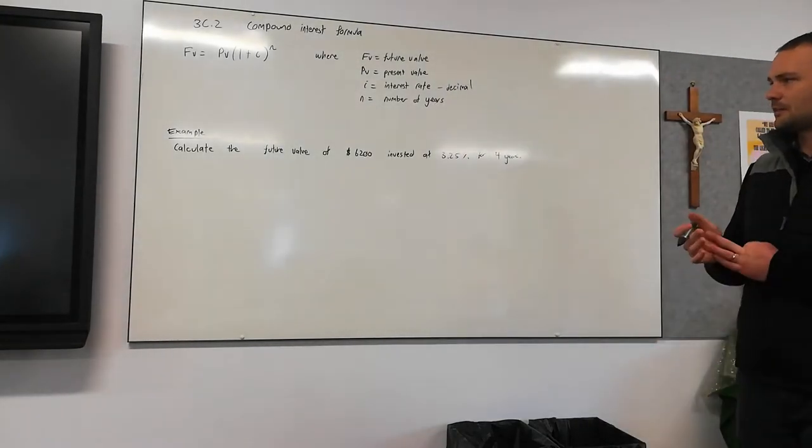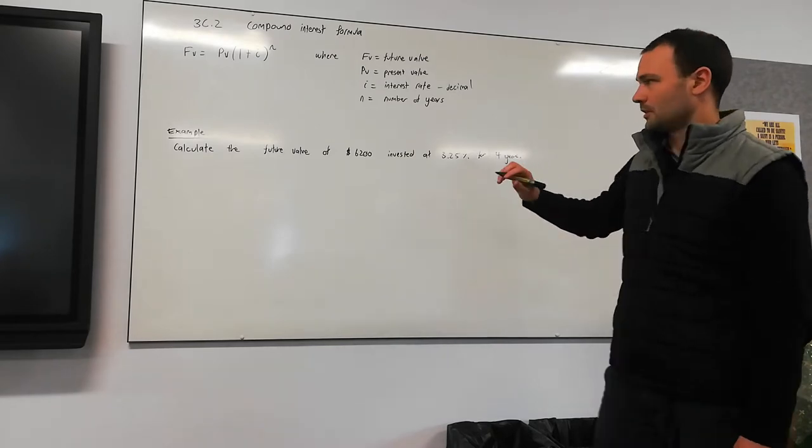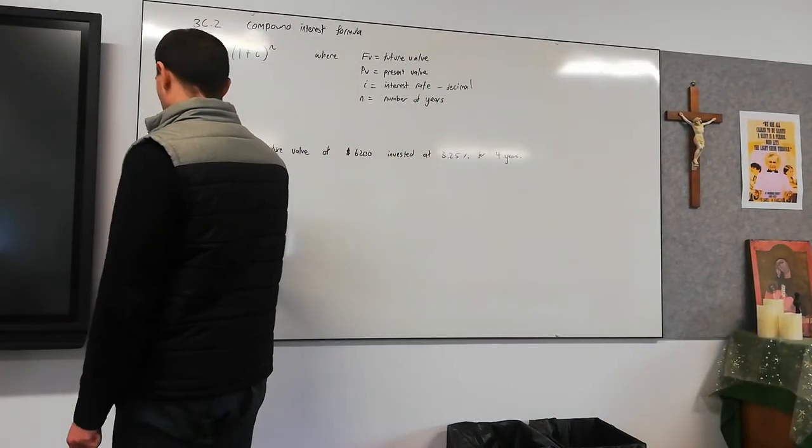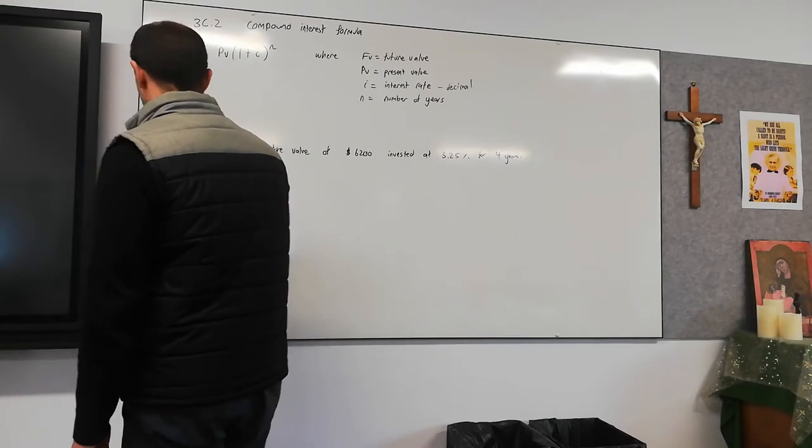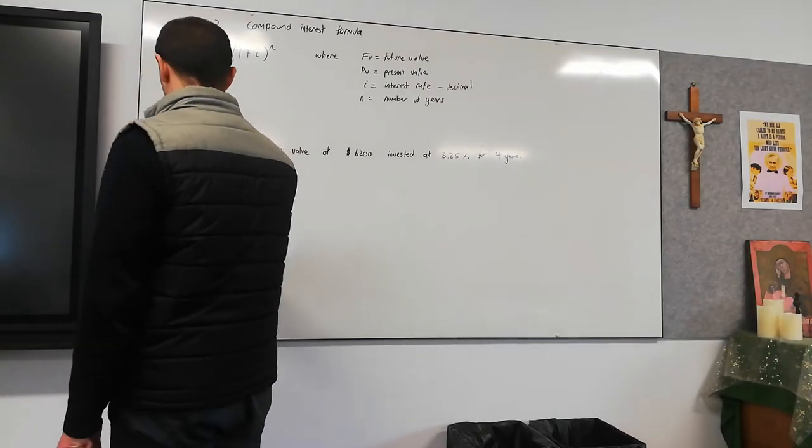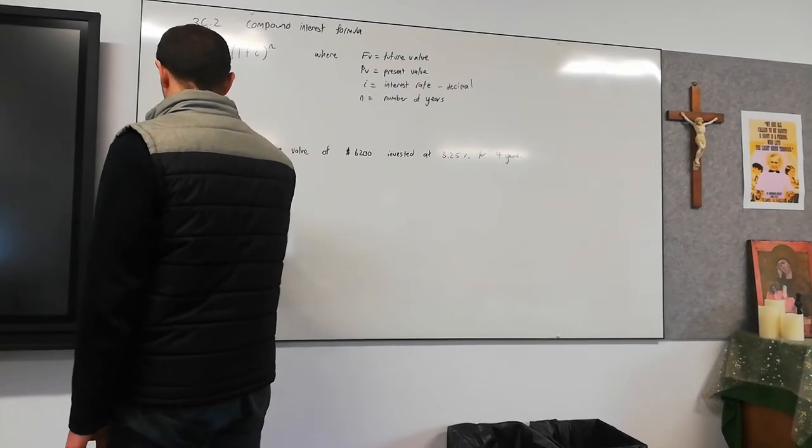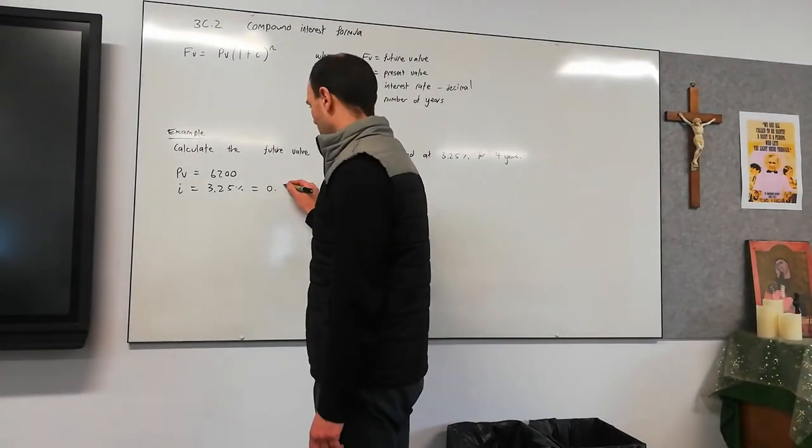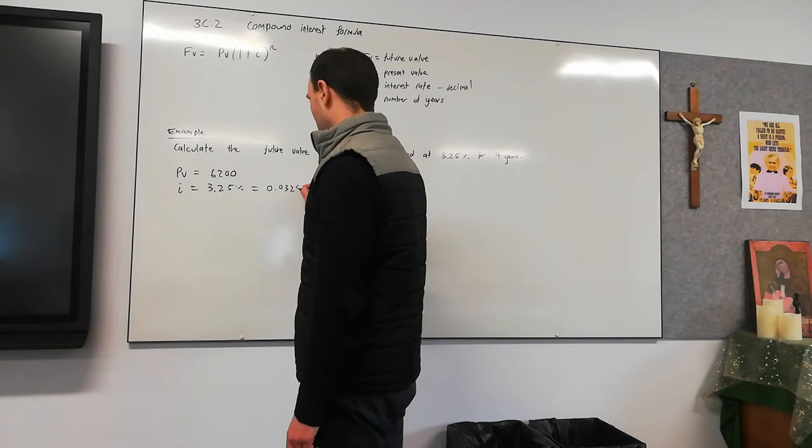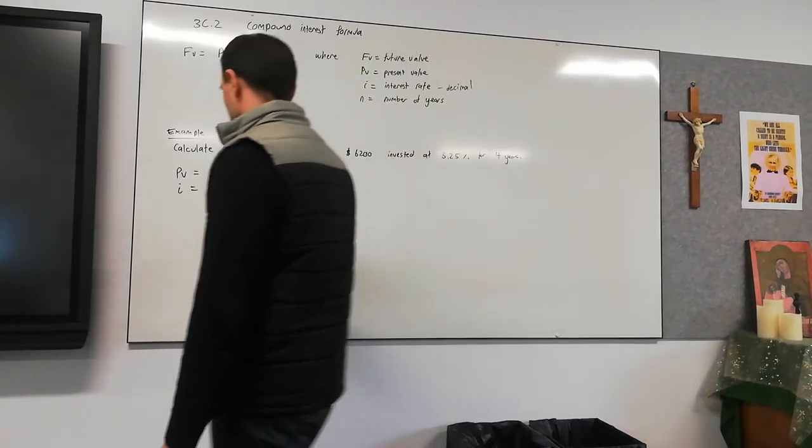Calculate the future value of $6,200 invested at 3.25% for four years. I'm just going to go through a list of things before we plug it in. Our present value is $6,200, we're trying to find the future value. Our interest rate is 3.25%, and remember we need to express that as a decimal, so we divide it by 100. In our calculator, it's going to be 0.0325, and the number of years is four years.